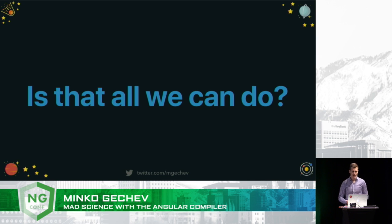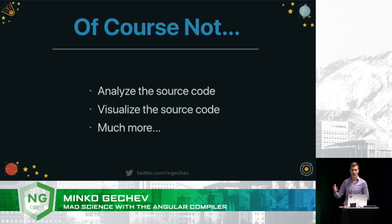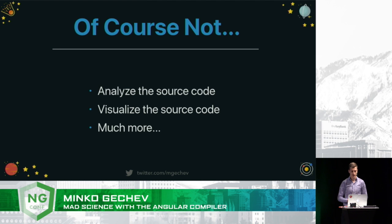But is that everything that we can do with the compiler? Of course not. We can also take the intermediate representation of the source code of our application that it produces and analyse it somehow, or we can just visualize it in different ways. We can do much more, but today we're going to focus on these two points.